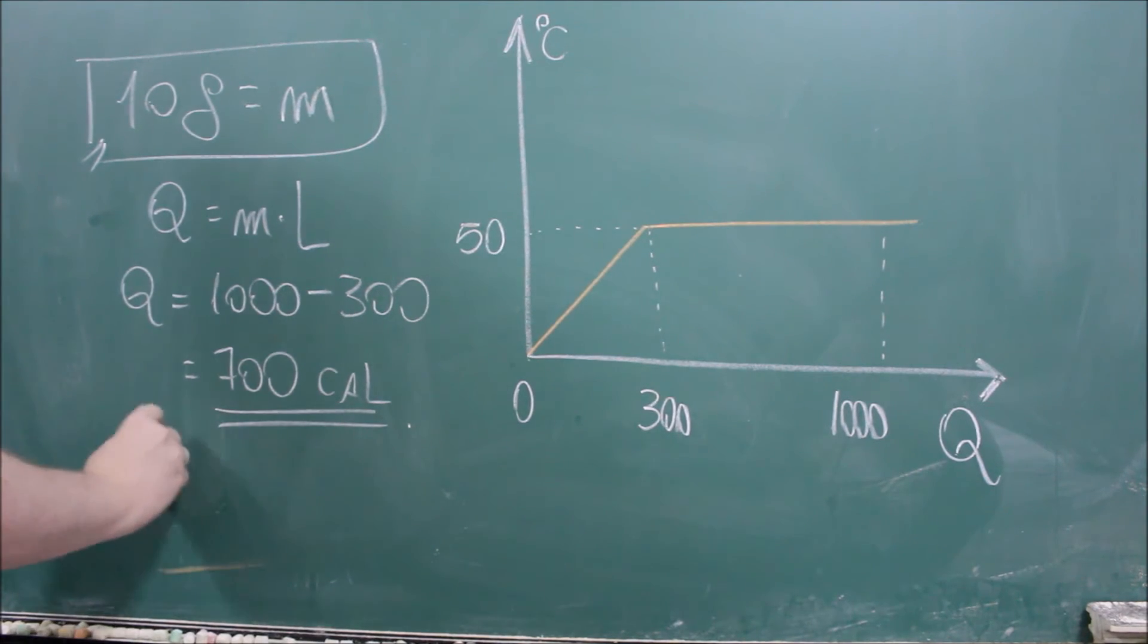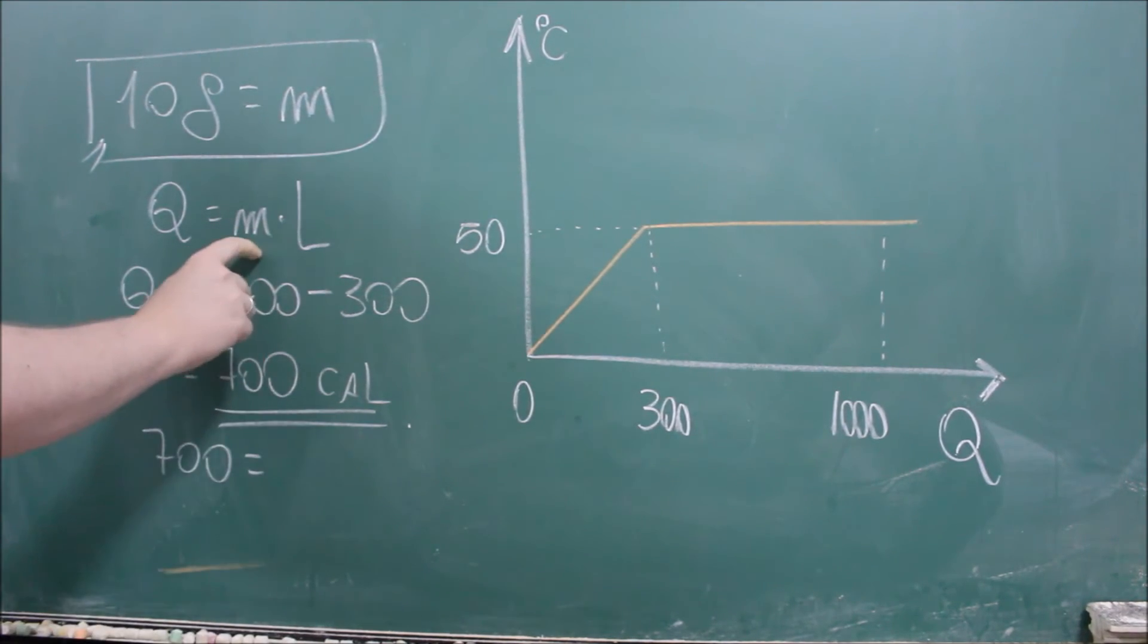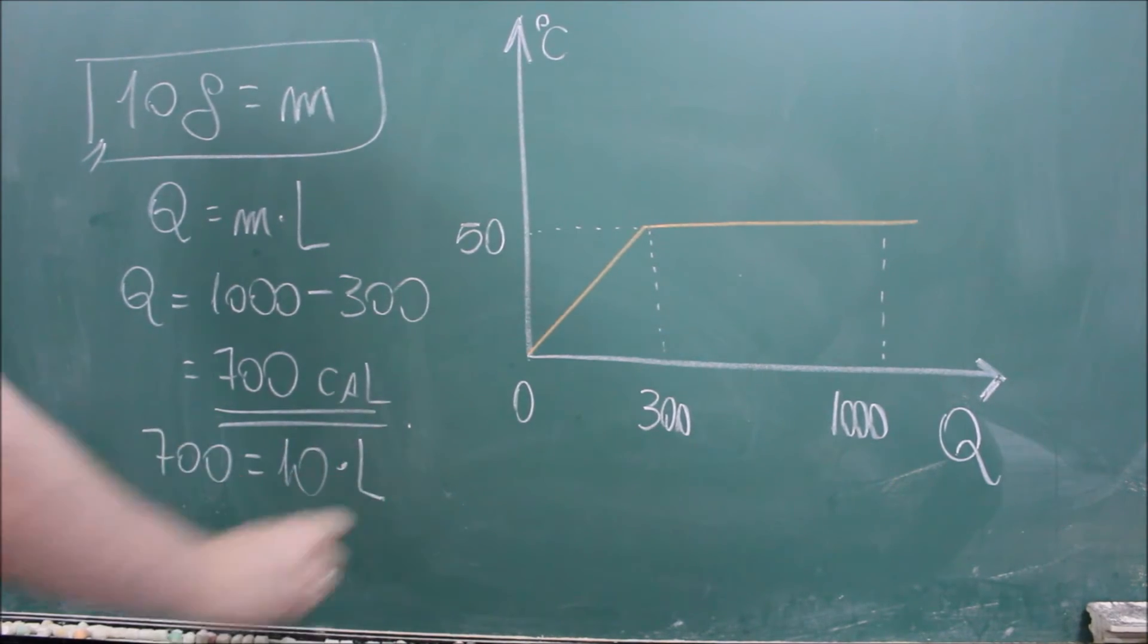Então agora eu vou colocar 700 igual a 10 no M, vezes L. E você vê aqui que o L dá 70.